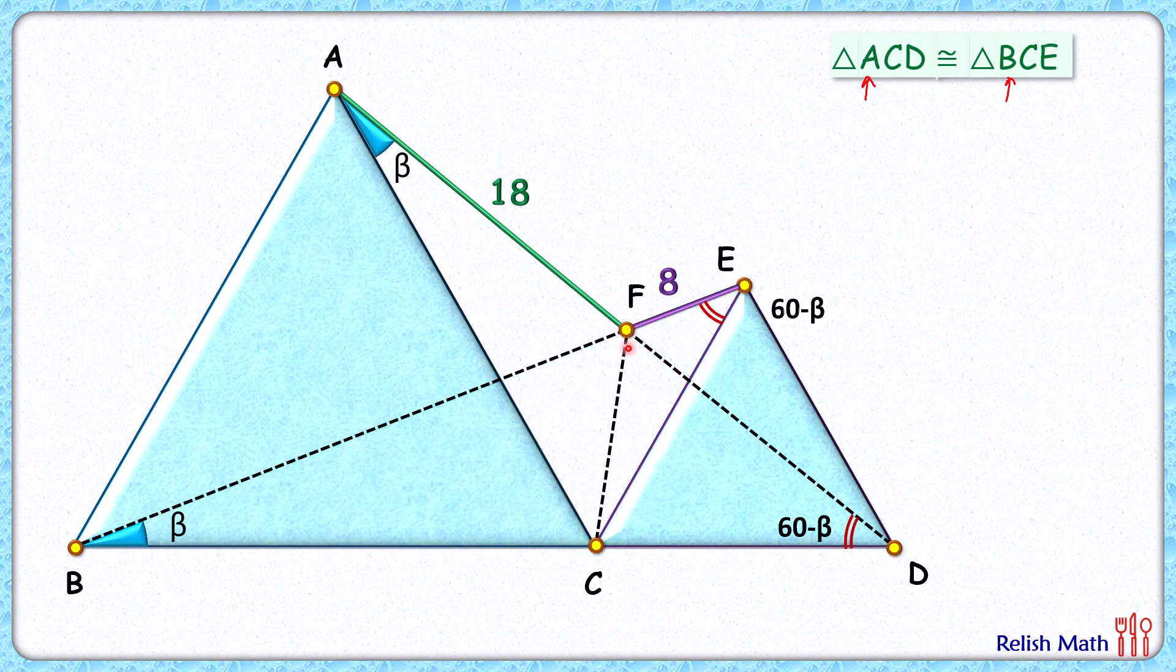Now let's join FC again, and this value of x is what we have to find. Now this FC length is subtending an angle of beta degrees at point A and subtending an angle of beta degrees at point B.